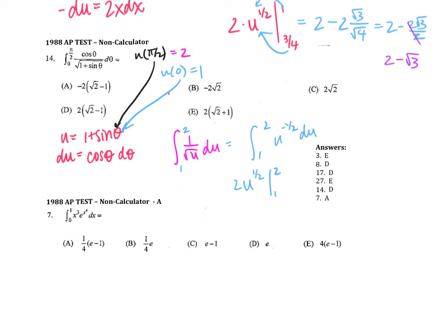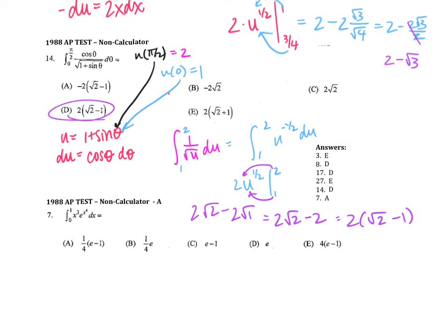Plugging in my upper bound gives 2 root 2, minus 2 root 1, which is 2 root 2 minus 2. Factoring out a 2, I'm left with 2 times the quantity root 2 minus 1. Answer D.